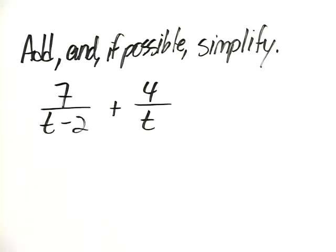Add, and if possible, simplify: 7 over t minus 2 plus 4 over t.